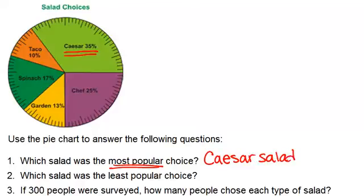The next question is, which salad was the least popular choice? So then we have to look for which of the salads has the smallest percentage? And that would be the taco salad, 10 percent. That's the smallest number. So the taco salad was the least popular choice.